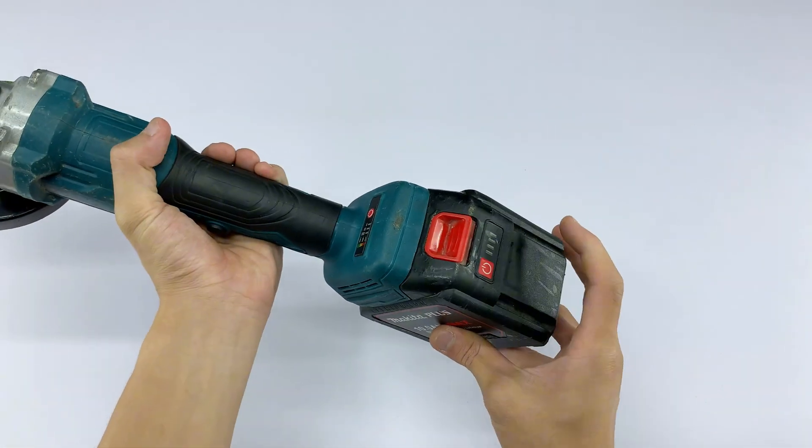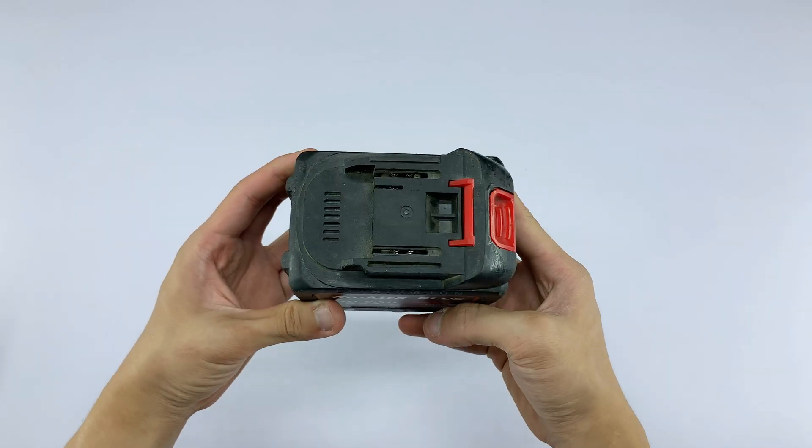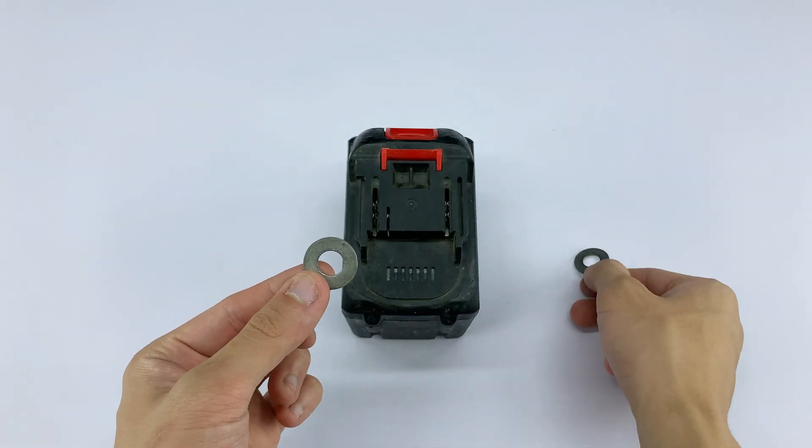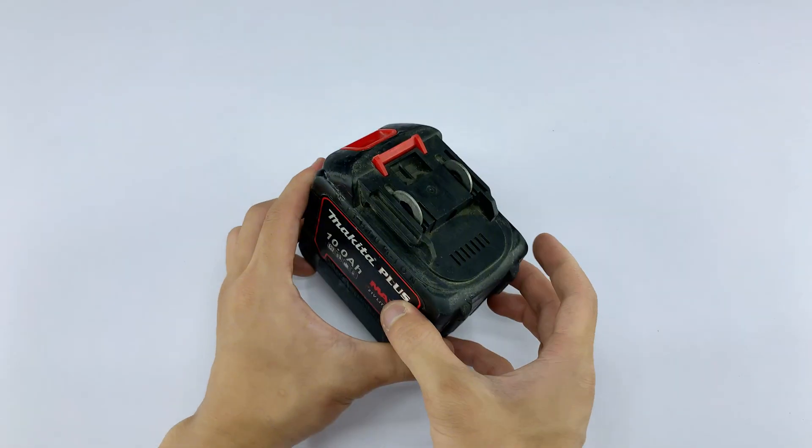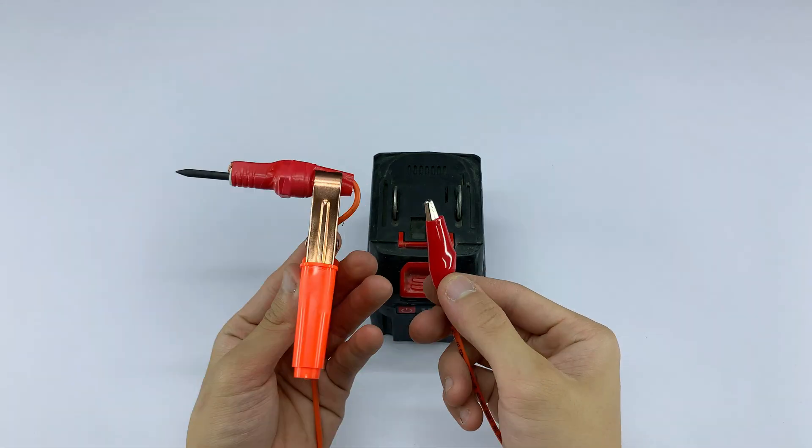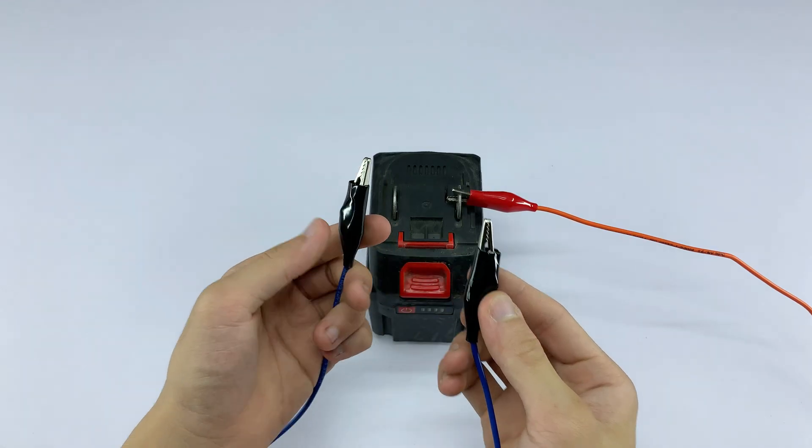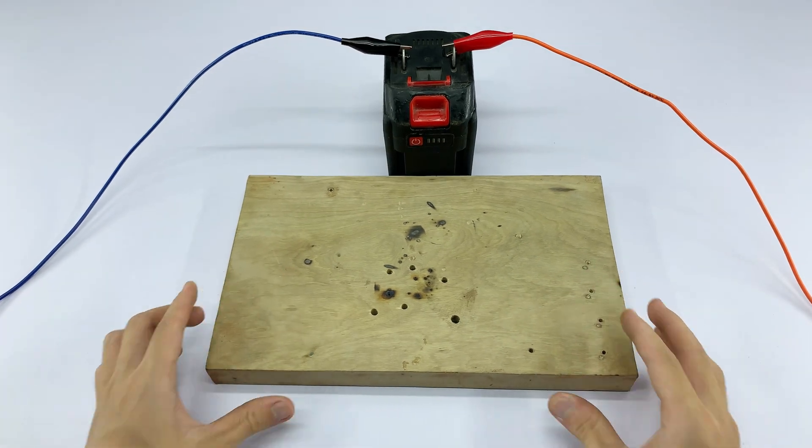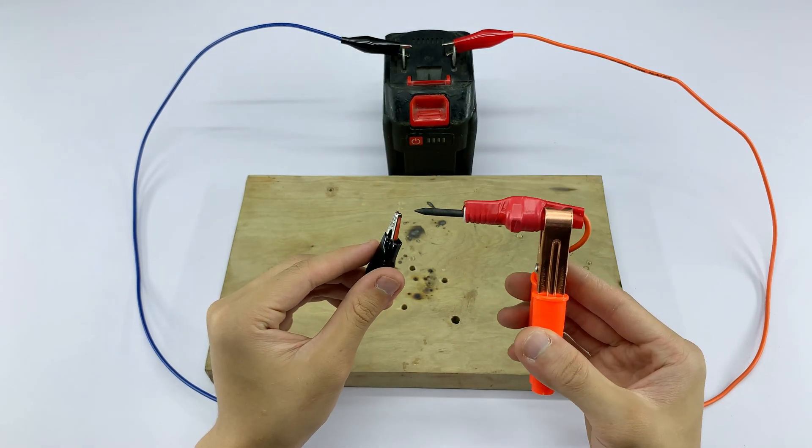Now I'm going to remove the battery from the electric grinder. This battery packs 10 amp hours and 21 volts, definitely a solid power source for our homemade welding tool. These two metal washers in my hand will act as the bridge between the power source and our homemade welding tool. I'll attach one washer to the negative terminal and the other to the positive terminal of the battery.